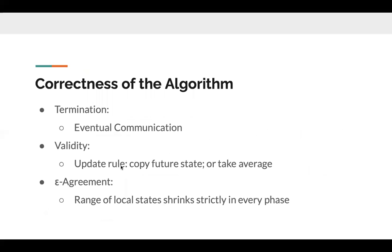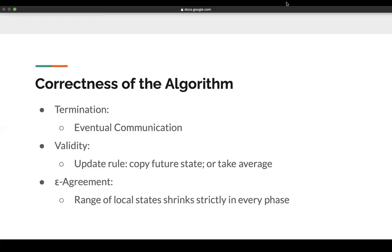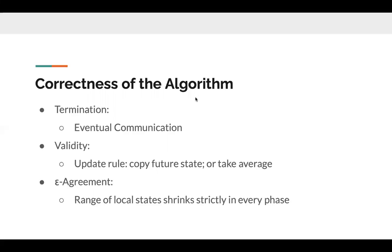Now we will present the proof structure of our algorithm. First, termination is satisfied because our eventual communication assumption guarantees that every crash-tolerant node will eventually receive enough messages to proceed to a higher phase. Also, validity is easy to see because we only consider crash failure, so either copying a future state or taking average of local states guarantees that the new state will fall in the range of the inputs. The hard part is the epsilon agreement of our algorithm. The intuition is that the range of local states shrinks in every phase, and this can be proved by induction.